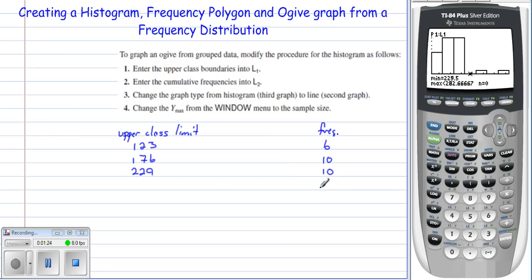Next one is 282, and there are zero things. Next class is 335, and there's 1. Next class is 389, and there are zero. And the last class is 442, and there is 1 item.